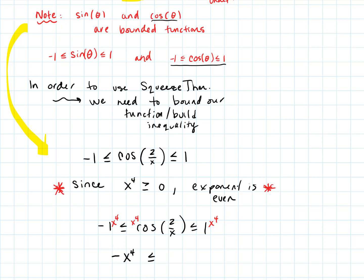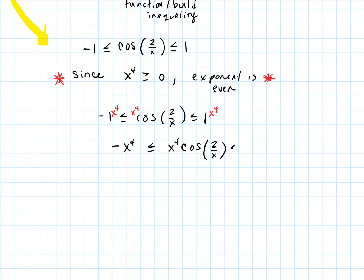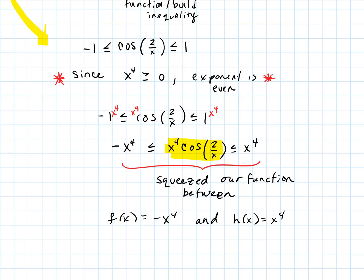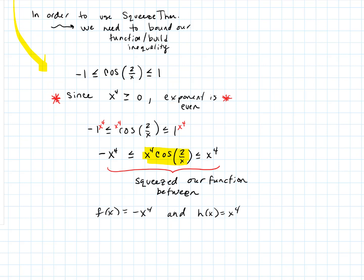Multiplying through by x⁴ gives us: −x⁴ ≤ x⁴ · cos(2/x) ≤ x⁴. We have now squeezed our function in between two other functions. That's exactly what we have to do to use the squeeze theorem — set up the inequality and determine the lower bound function and the upper bound function. Here, f(x) = −x⁴ is the lower bound and h(x) = x⁴ is the upper bound. We've bounded our function and built the required inequality.